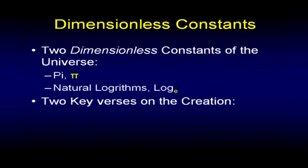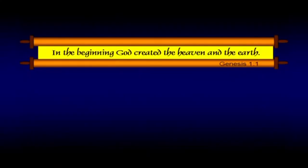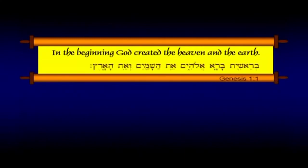There are two key verses in the Bible about creation: Genesis 1:1 and its equivalent in the New Testament, John 1:1. They both announce the creation. It's interesting if we examine those two verses very carefully. The first verse, Genesis 1:1 — 'In the beginning God created the heaven and the earth.' If we look at that in the Hebrew, remember it goes from right to left.